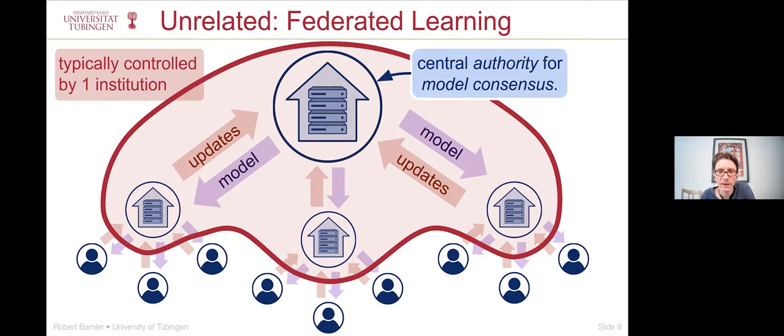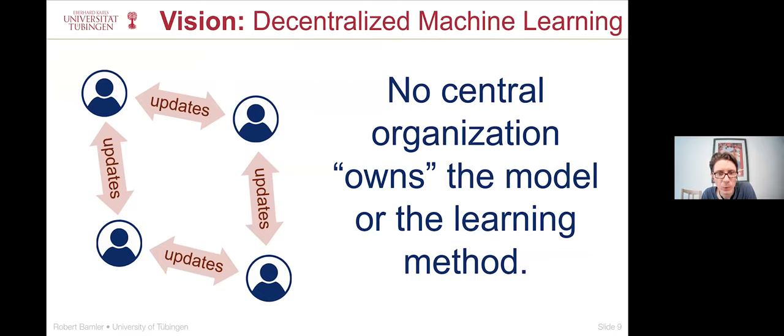And one of the main reasons for that is just that that's the predominant or almost the only economic model that we have, that the company that builds the models then also earns money by running these models. And then there's the second aspect here that even though we may do the bulk of the work on decentralized nodes, there still needs to be some sort of central authority so that you can reach model consensus on these sub-learners. So what I'm suggesting here is rather a vision where learning is done in a decentralized way where no organization owns the model or the learning method. So where learning is done without a central authority.